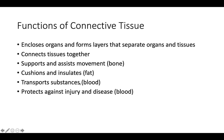Transport of fluid, nutrients, waste, and chemical messengers is ensured by specialized fluid connective tissues like blood and lymph. Adipose cells store surpluses of energy in the form of fat. When we take in too much food, it'll either turn into glycogen or stores of fat and get stored in these adipose cells, which also contributes to thermal insulation of our body.